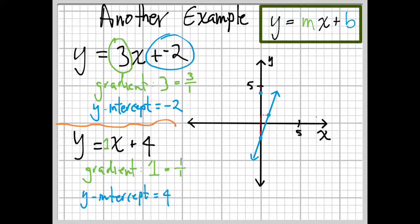We go up, plot the point 4 on the y-axis here. We go up 1 and over 1 and plot another point. And, there we go. Using a straight edge, we draw a line and we're good to go.